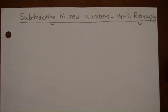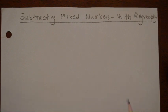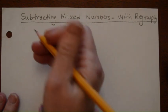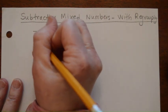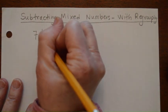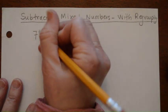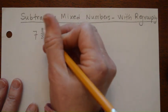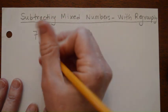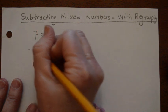Let's take a look at subtracting mixed numbers with regrouping. We've done subtracting mixed numbers without regrouping, but we're going to look at situations where the fraction on the larger number is too small to subtract the fraction from the smaller number.